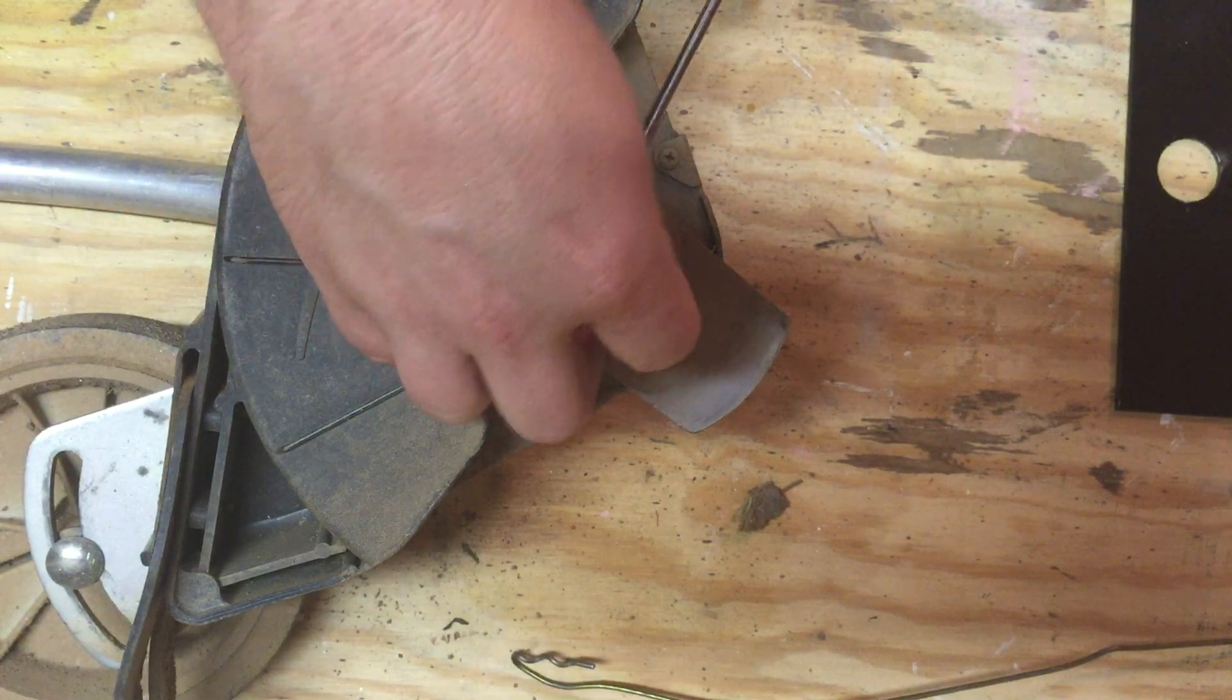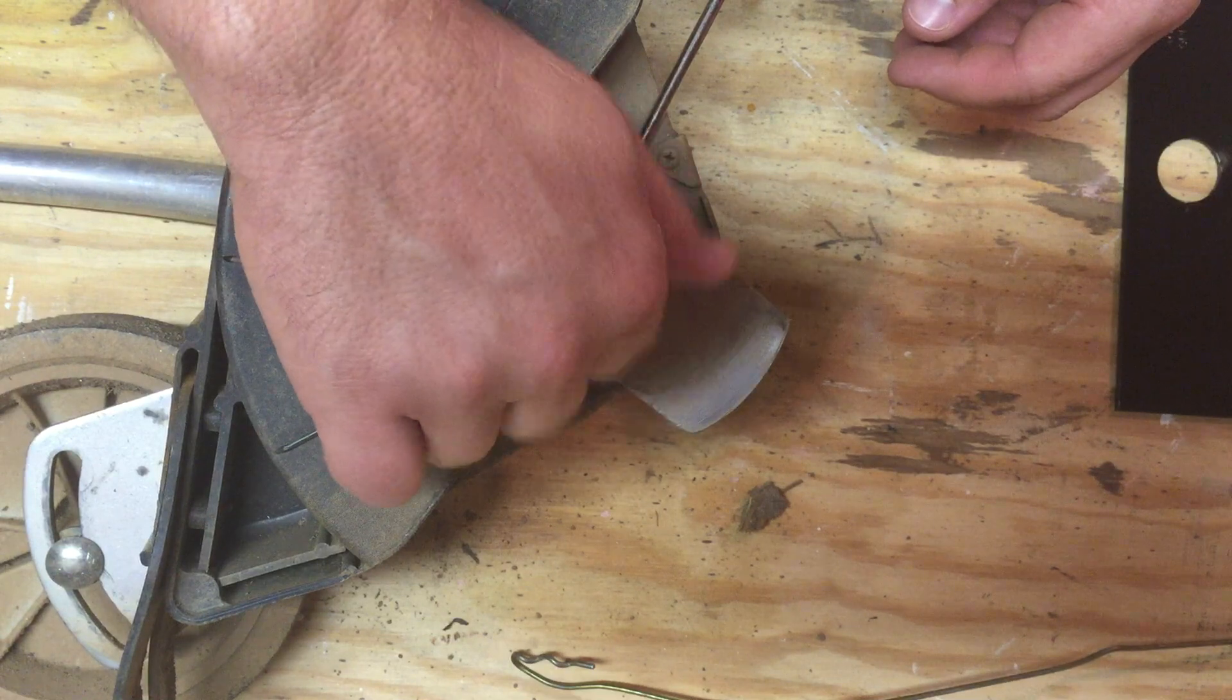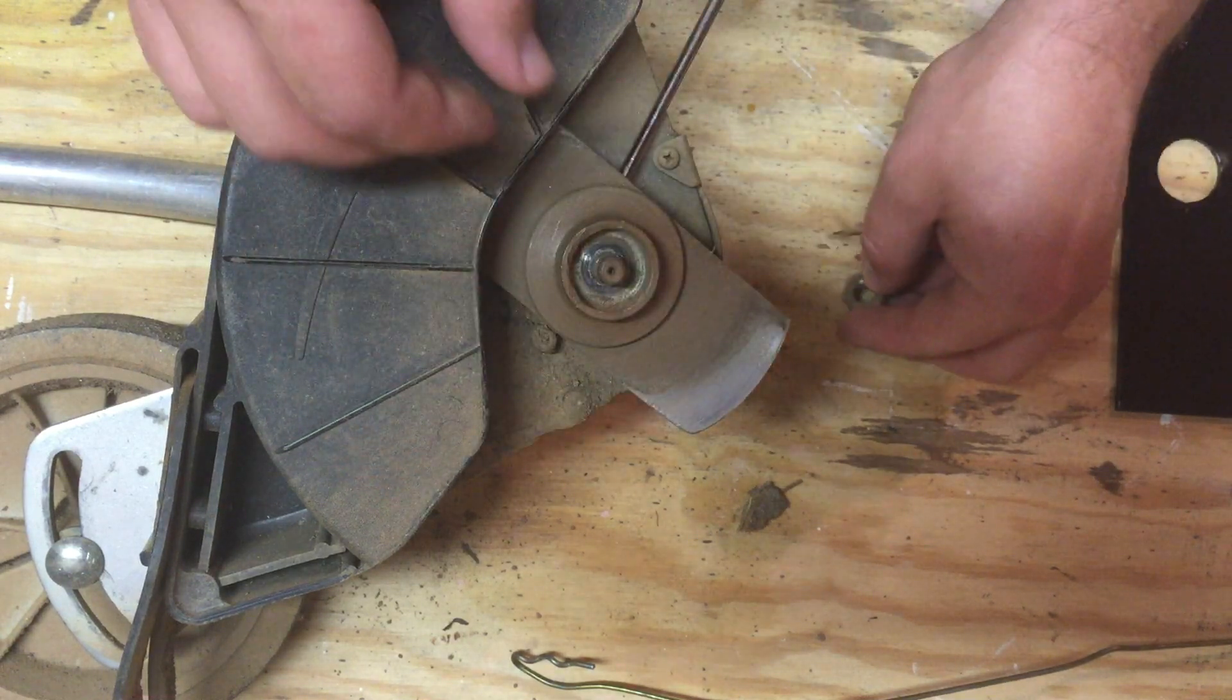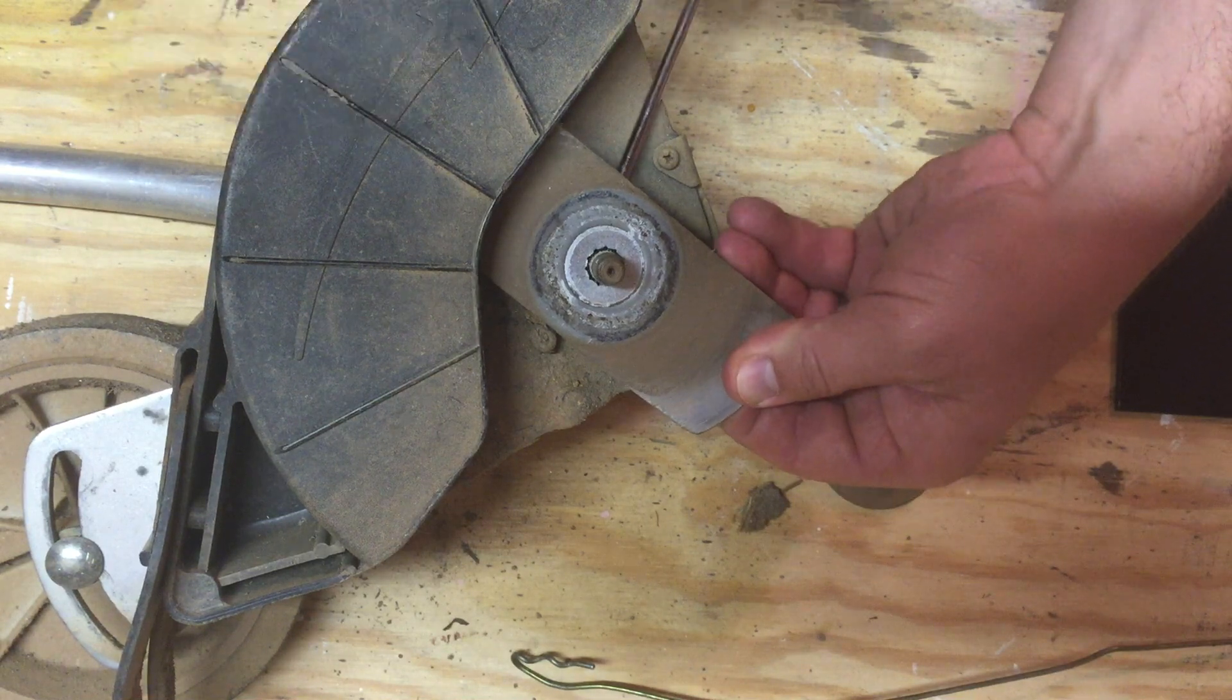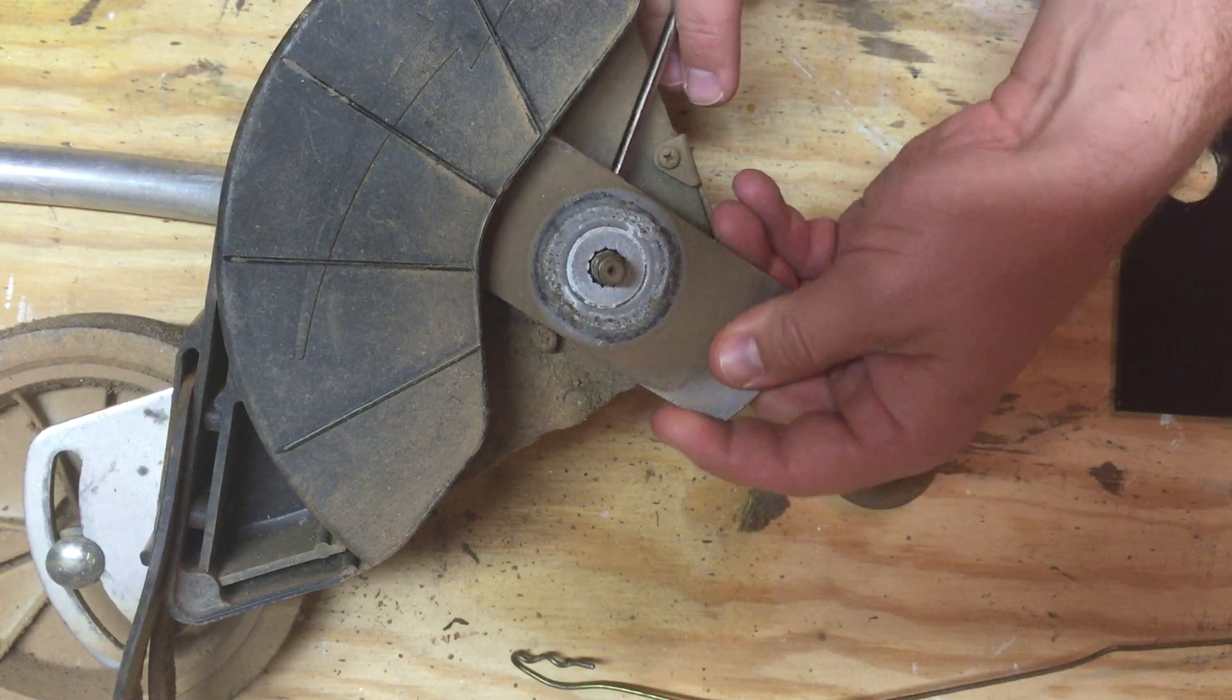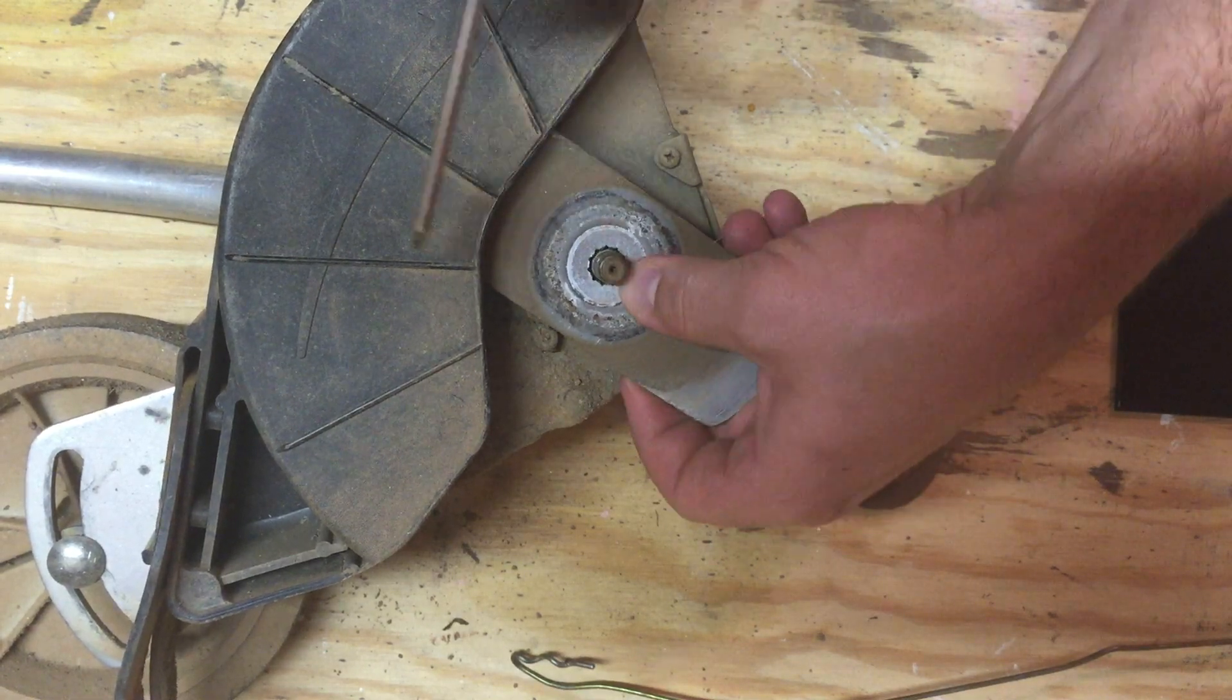So loosen that nut and take it all the way off. So the nut comes off. This guard piece comes off. And then the edger blade will come off. You'll have to remove... Sometimes you have to pull this out if it's stuck.